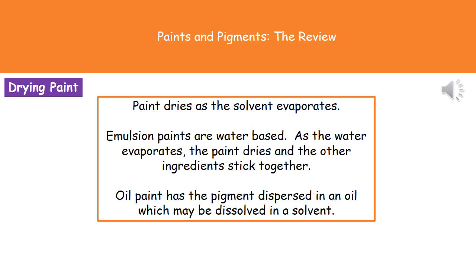If we think about emulsion paints first of all, the water is the solvent. As that water evaporates into the air, the paint is going to dry, and the other ingredients will be stuck together by the binding medium and held to the wall. Oil paint is slightly different, because oil paint has the pigment dispersed in an oil, which may also be dissolved in a solvent just to make it a little bit thinner.